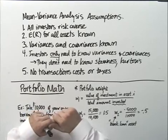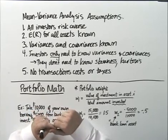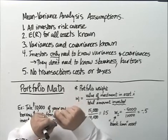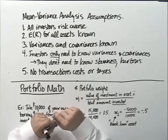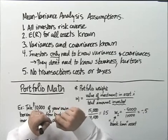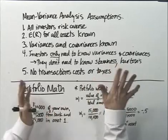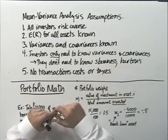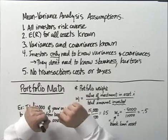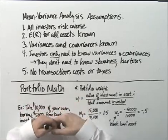The fourth assumption is one of the reasons we call this mean variance analysis. It is that investors only need to know the variances and covariances — they don't need to know anything about the so-called higher moments of the distribution, which encompass skewness, kurtosis, or any other aspects of the distribution. Variances and covariances are sufficient for describing everything that investors need to know to make their portfolio decisions.